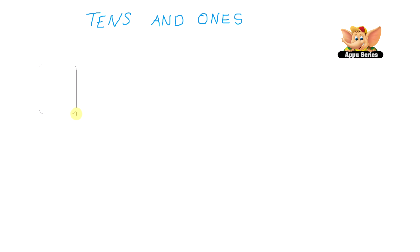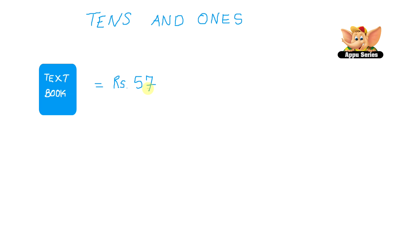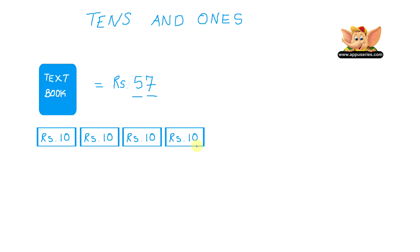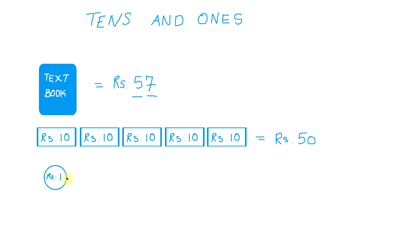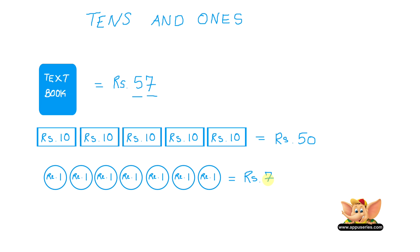Let me give you one last example. How many notes and coins would you pay for a textbook which costs rupees 57? Can you tell me how many 10s and 1s are there in 57? Absolutely! 57 has five 10s and seven 1s. So we pay five 10 rupee notes, which equals rupees 50. And for the remaining rupees 7, we pay seven 1 rupee coins. So in total, we have rupees 50 plus 7 equals rupees 57.